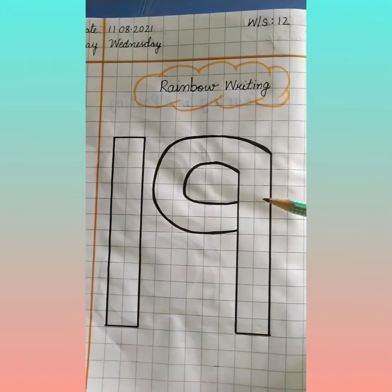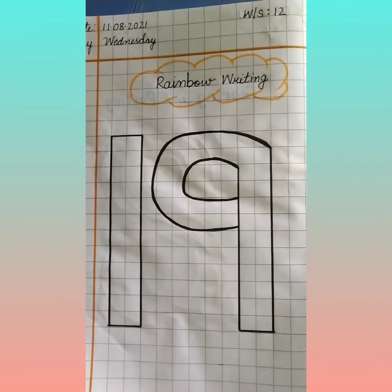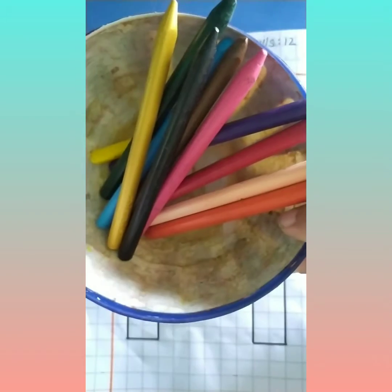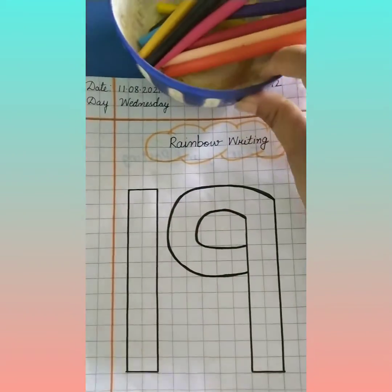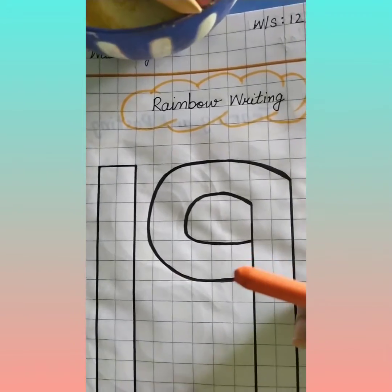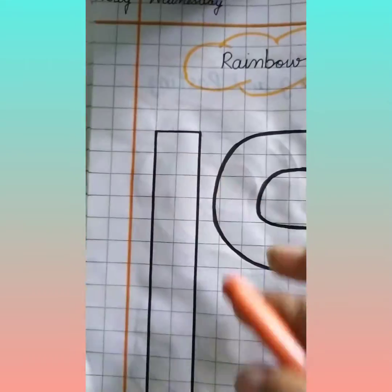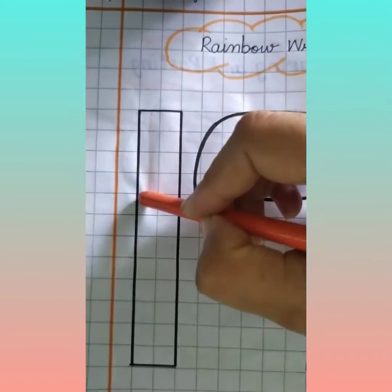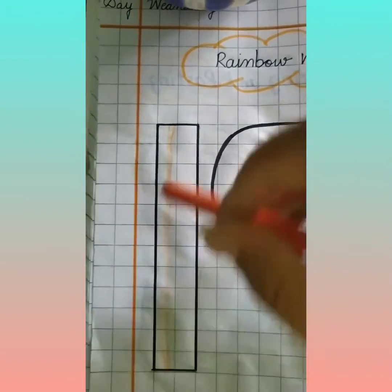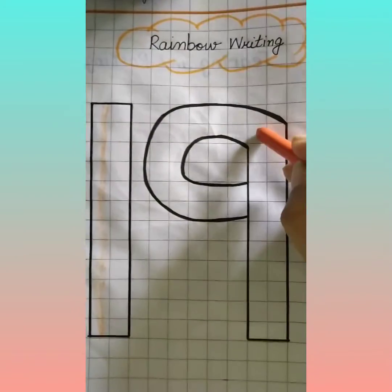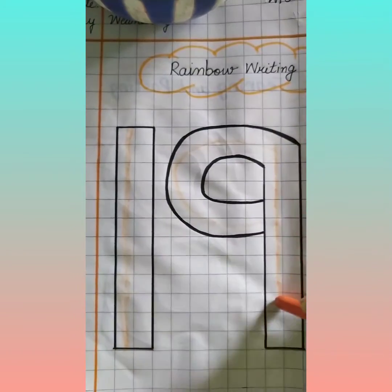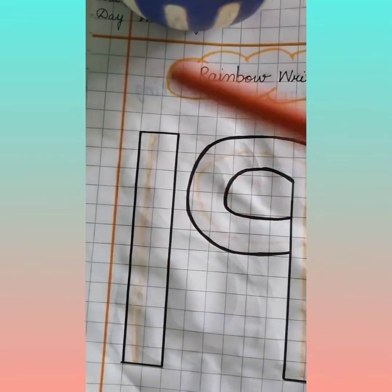That is rainbow writing of number 19. Aapko pata hai na, rainbow writing ke liye kya use karte hain? Hum use karte hain crayons. Hum aapne favorite color use karte hain. Sab se pahle ma'am use karti hain orange color. Sab se pahle hum one likhenge — up to down. Hum ne one likha. And nine — nine kaisi likhenge? Curve, then standing line. One, nine, nineteen.